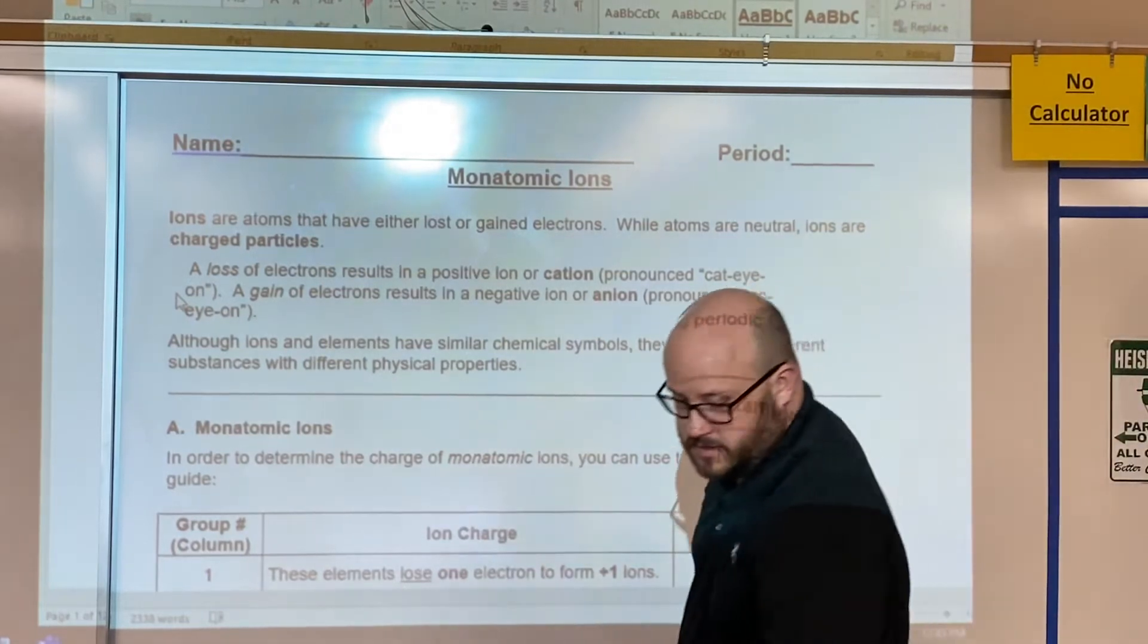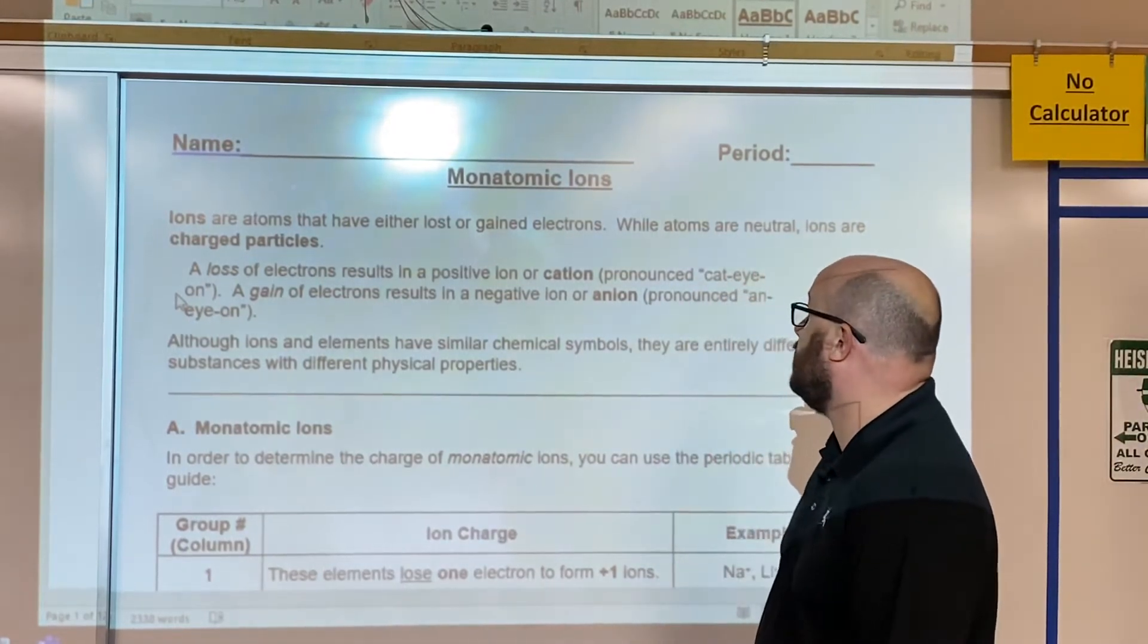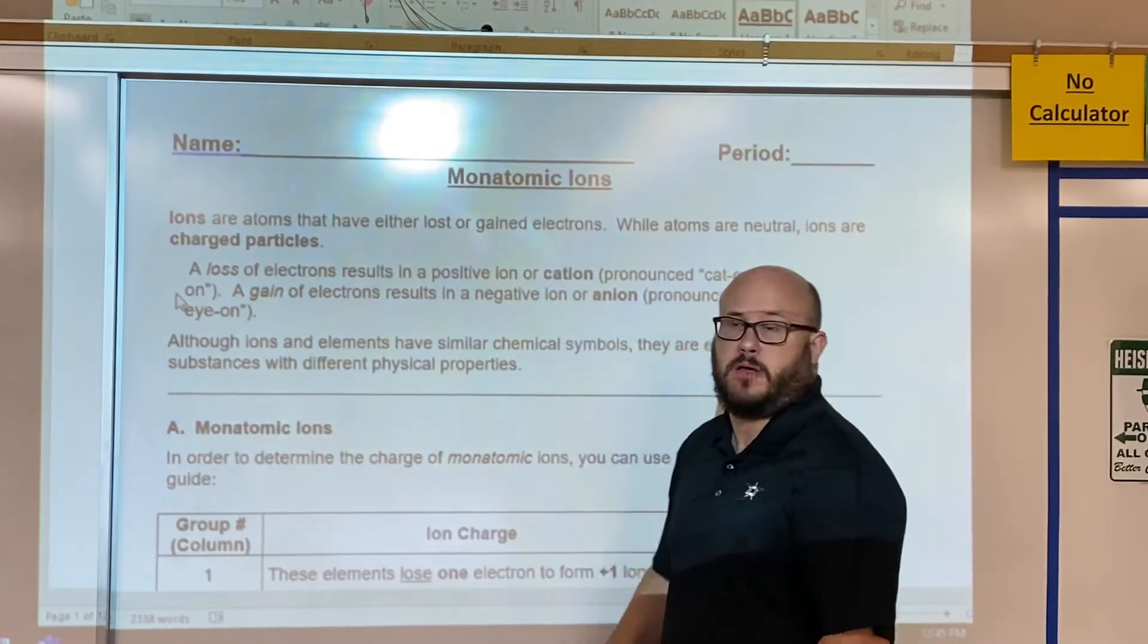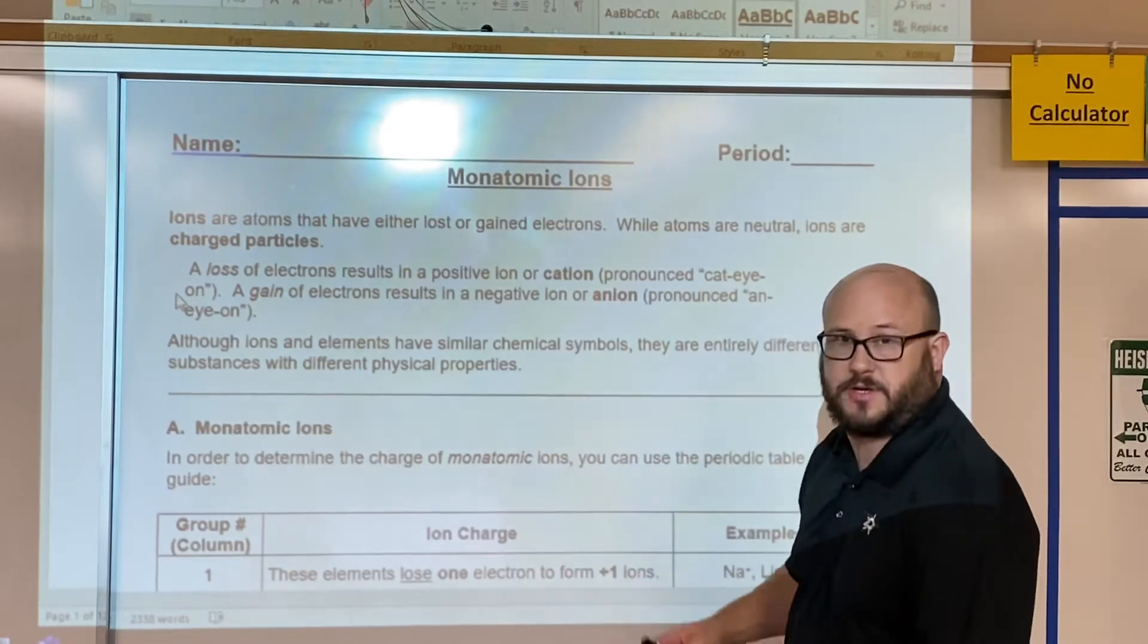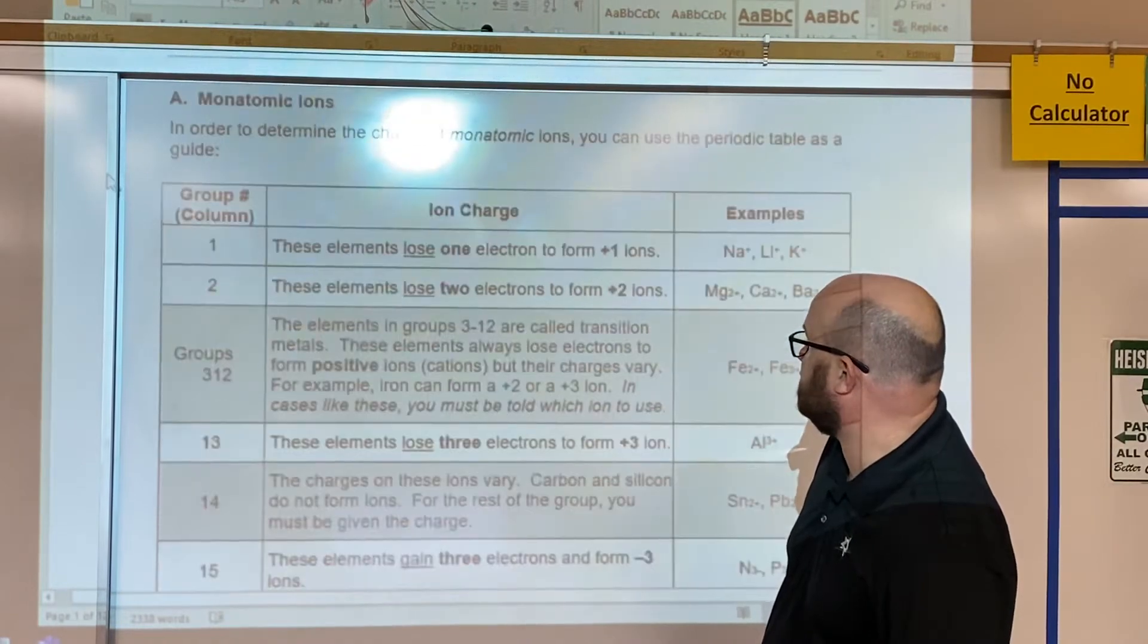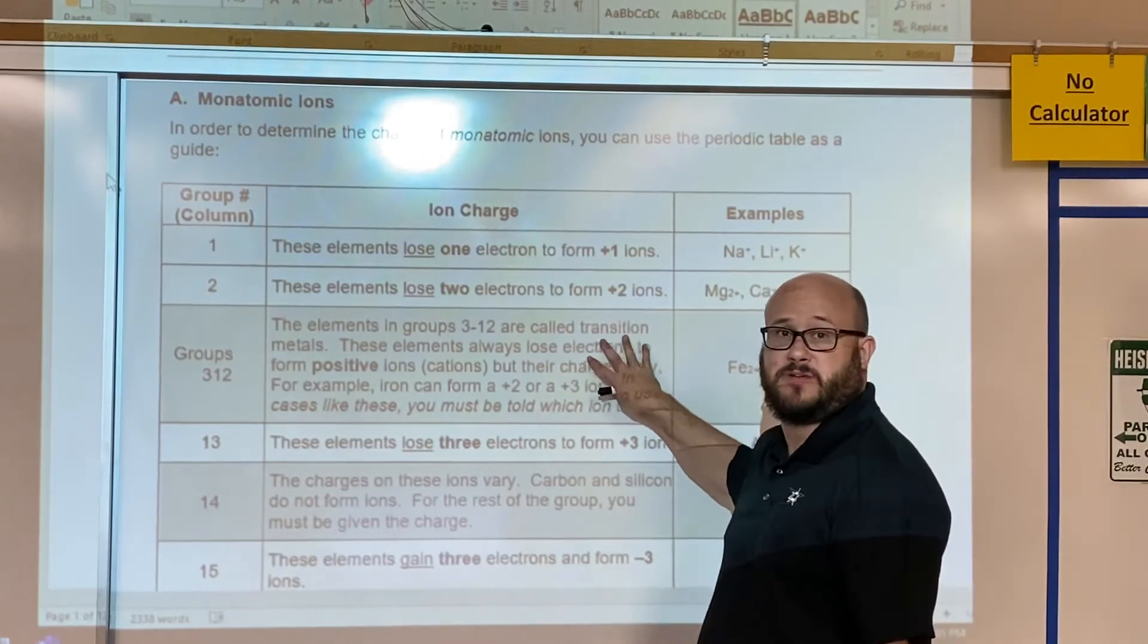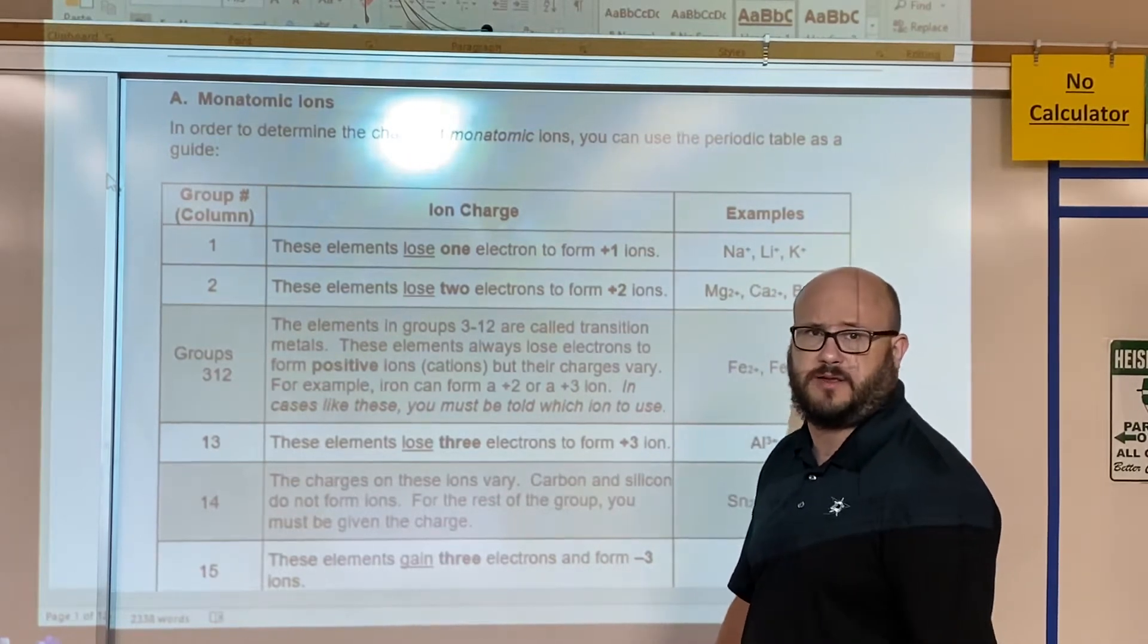Hey class, this is the first video for our bonding unit. We're going to talk about monatomic ions first. Monatomic meaning one atom, and then of course ions is an atom that's charged. Let's look at a few examples. This first page tells us which groups lose and which groups gain electrons, and this can be found on canvas.